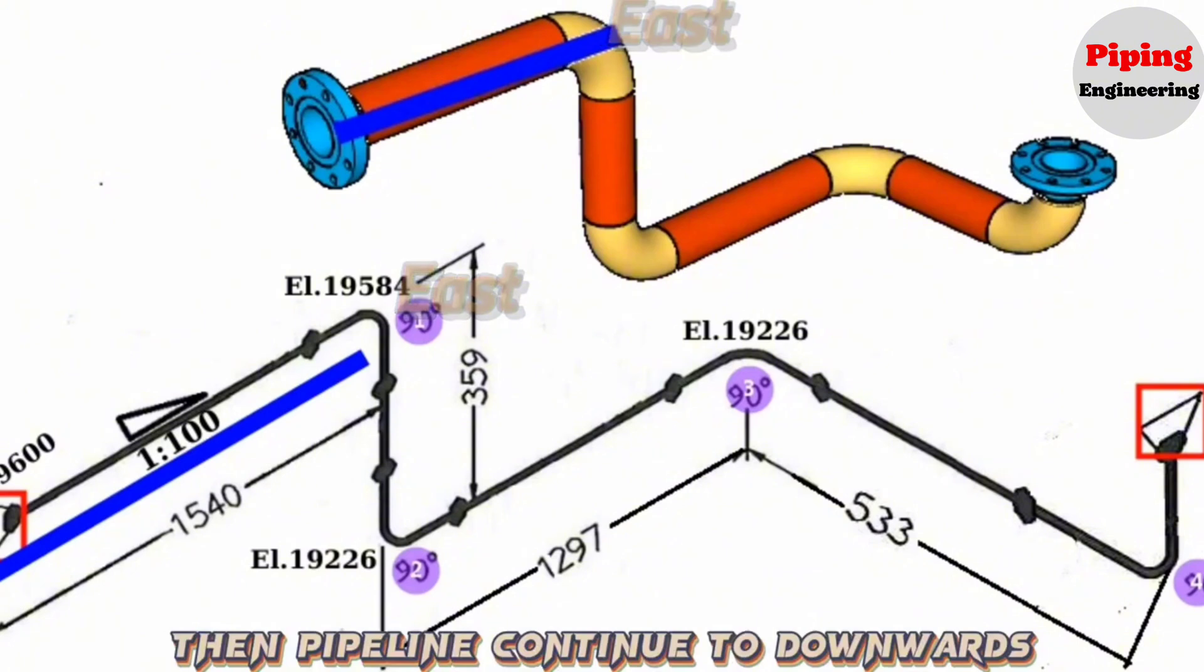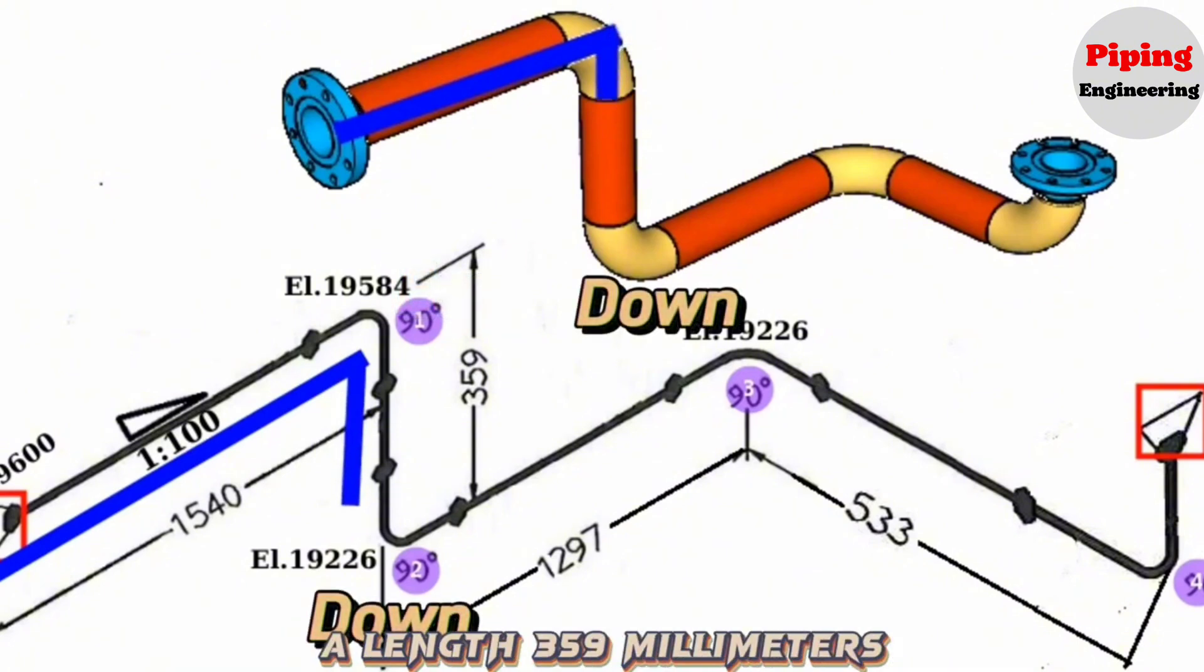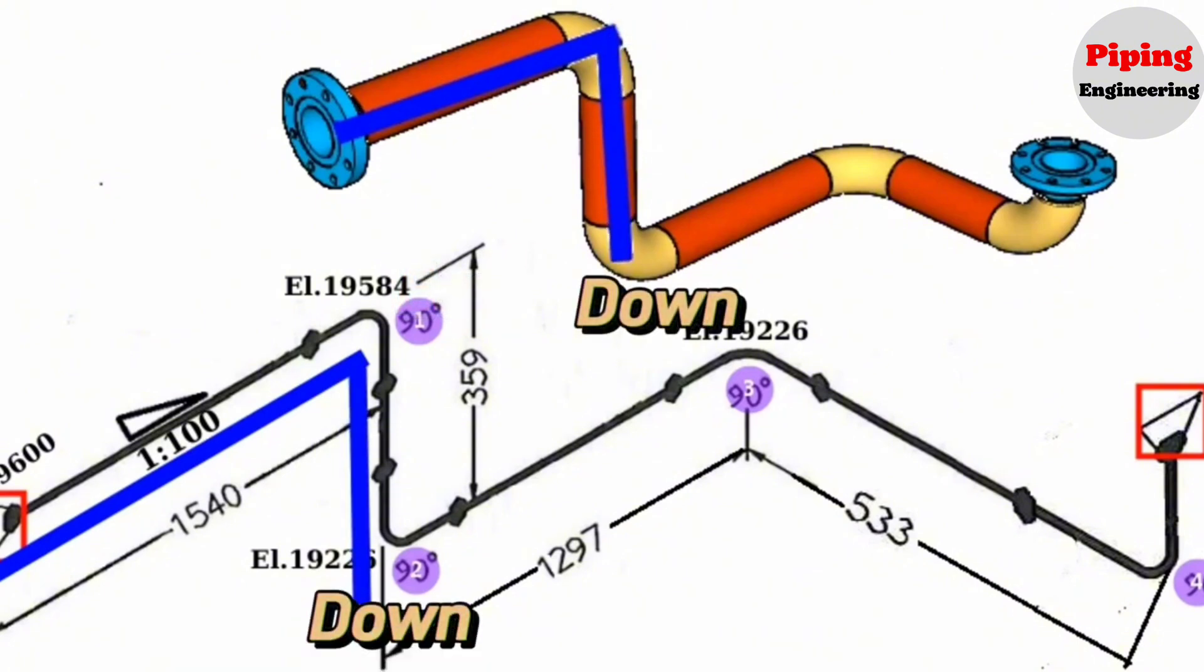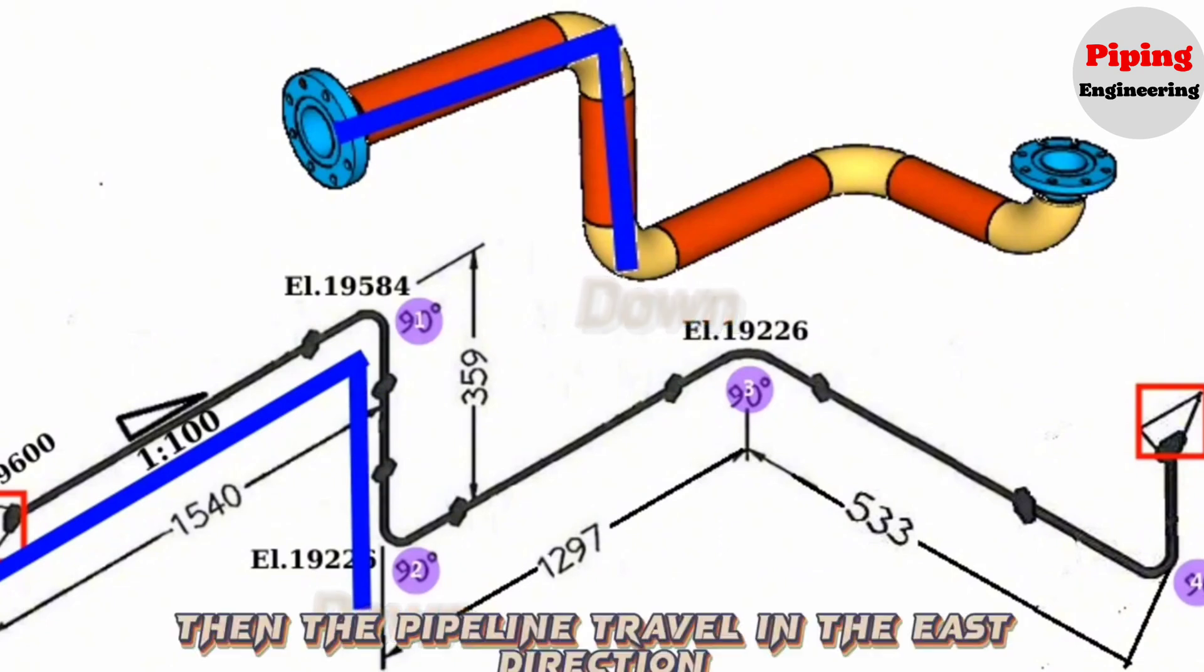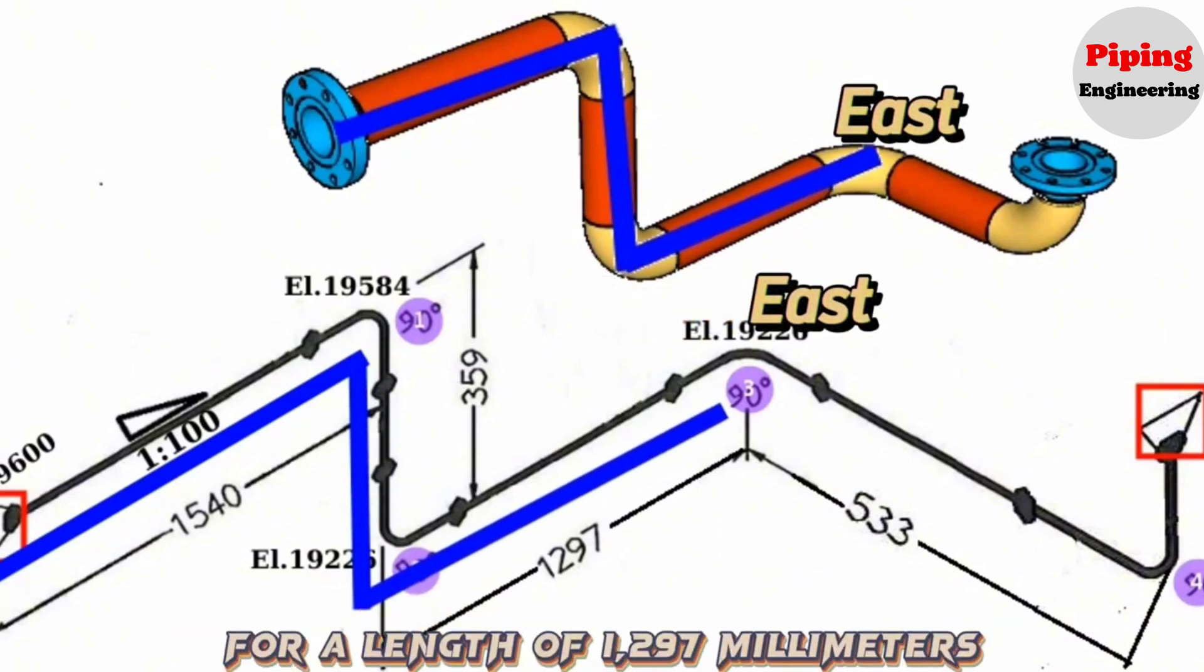Then the pipeline continues downwards for a length of 359 millimeters. Then the pipeline travels in the east direction for a length of 1,297 millimeters.